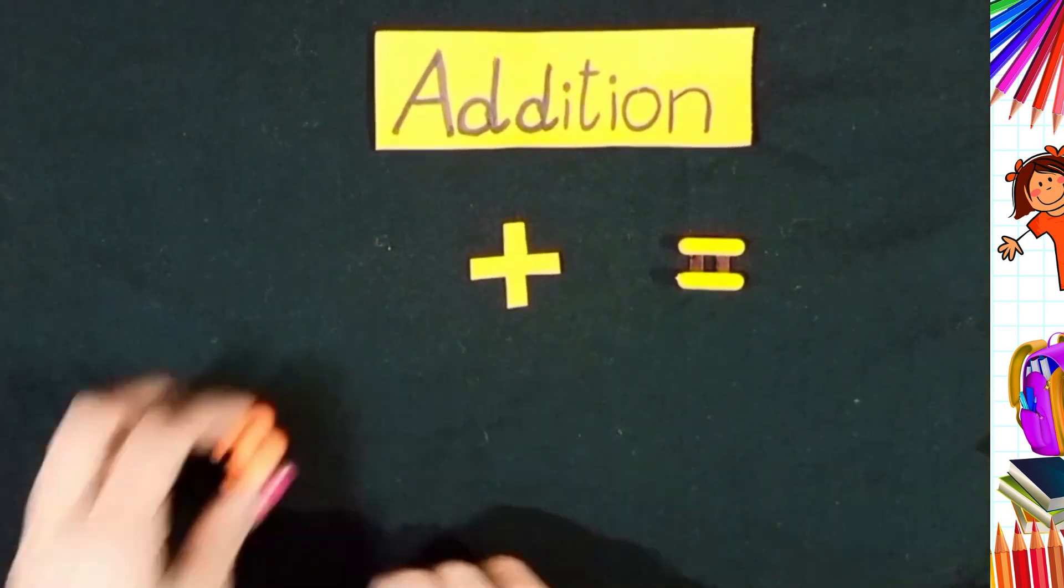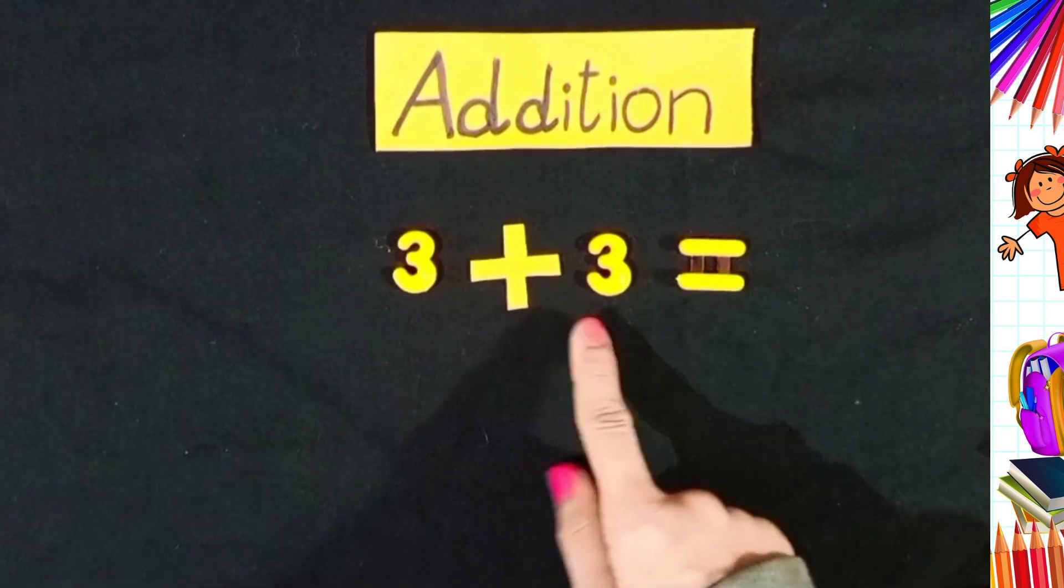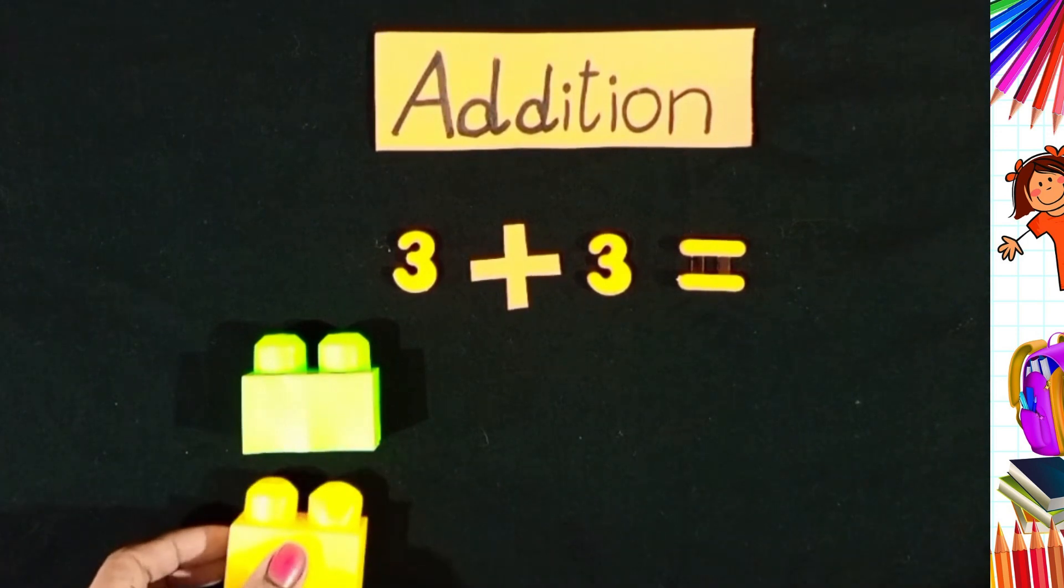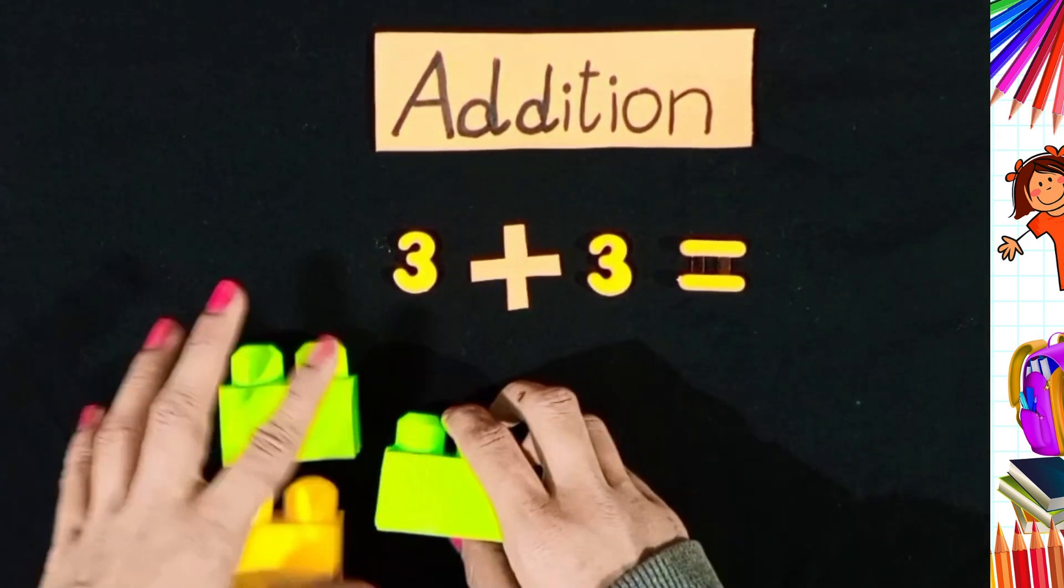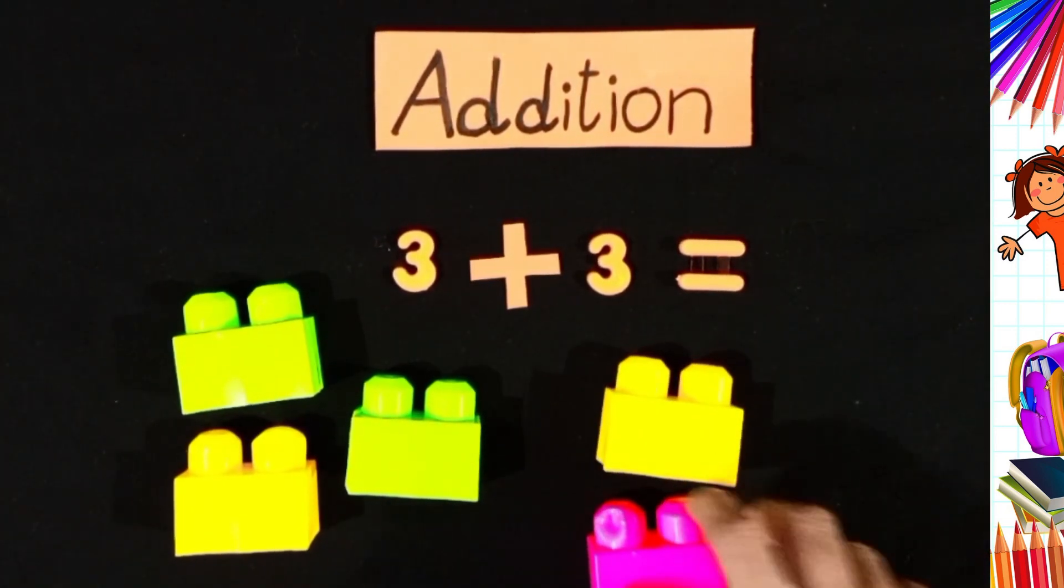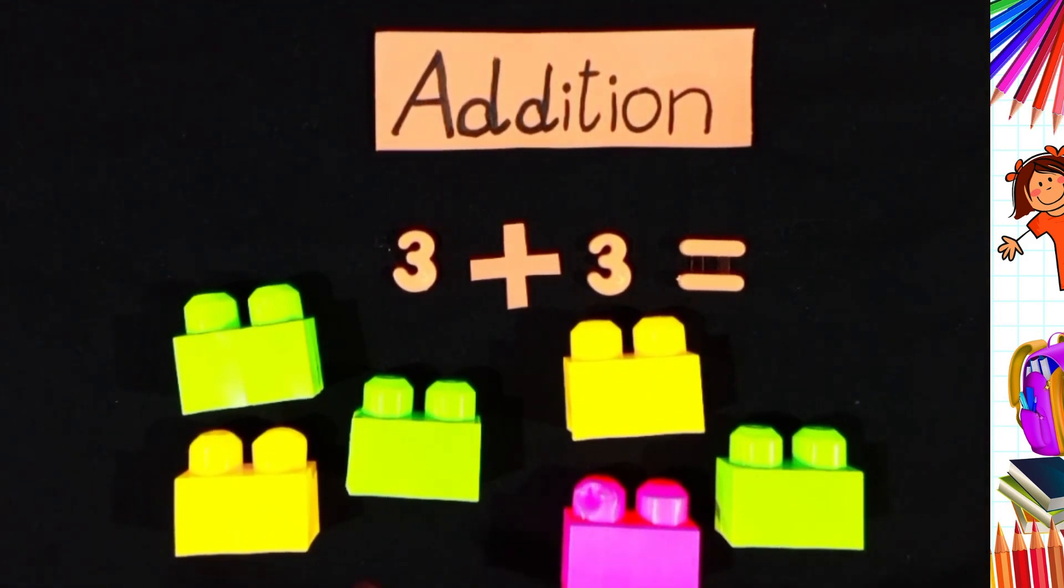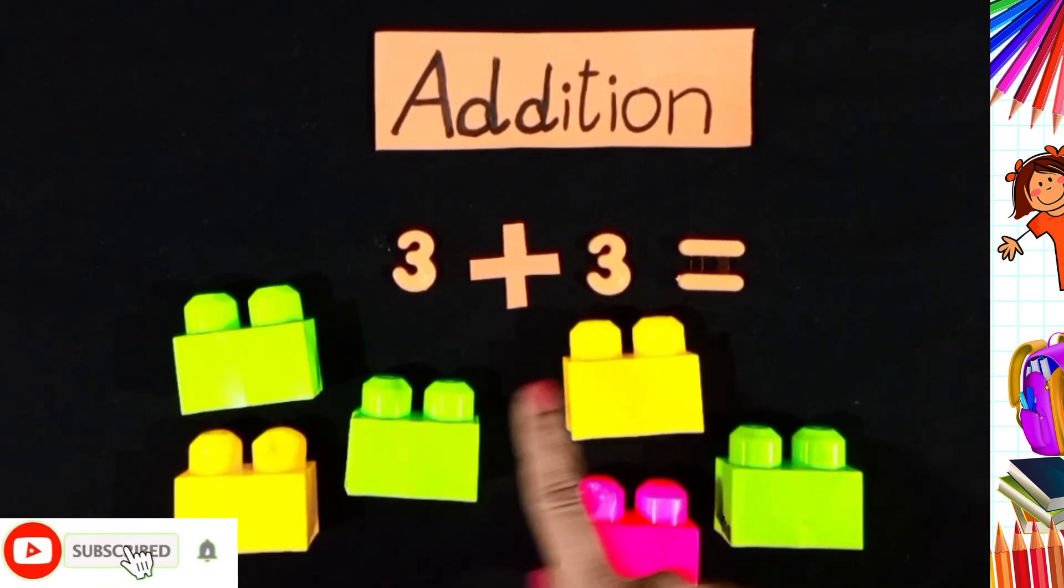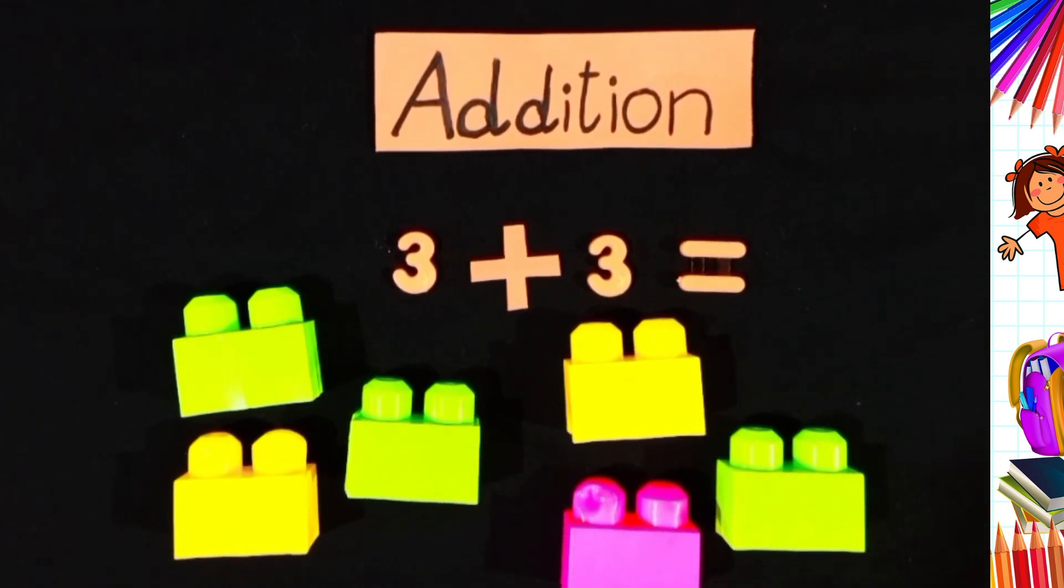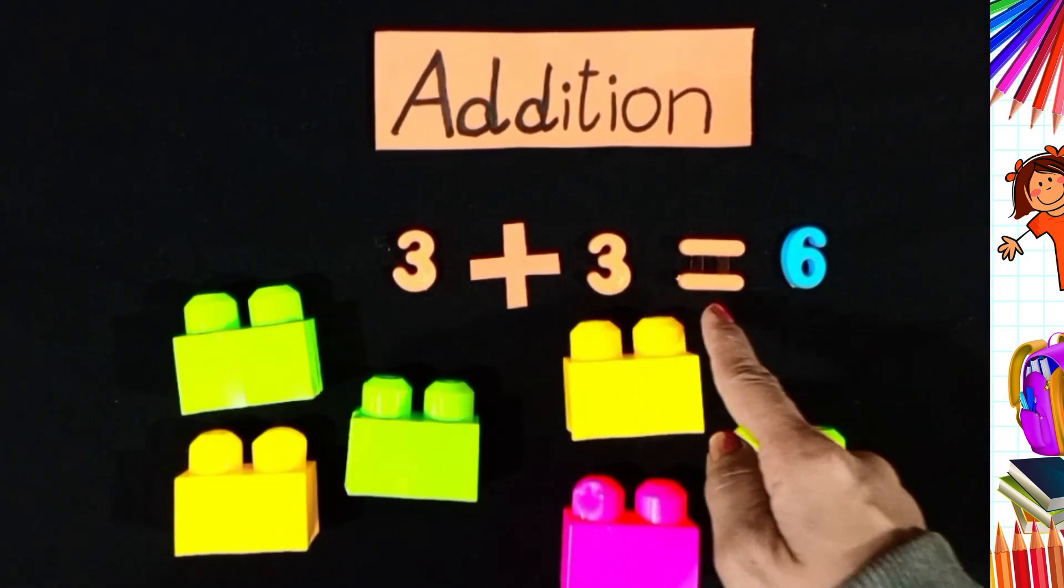Next, 3 plus 3. 3 plus 3 equals to what? 1, 2, 3. 3 plus 3 equals to 1, 2, 3, 4, 5, 6. The answer is 6. 3 plus 3 equals to 6.